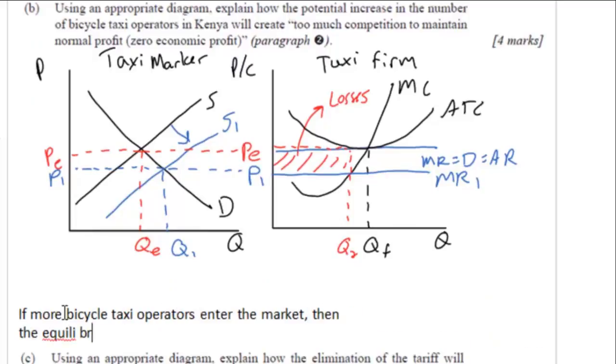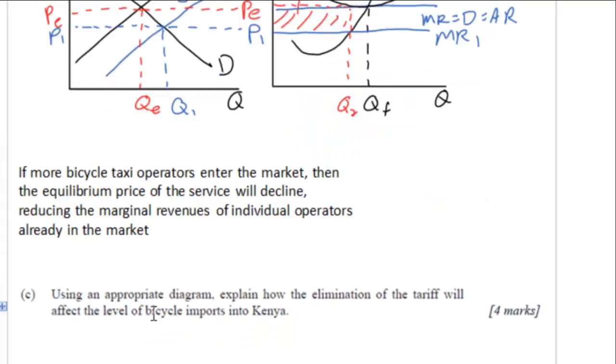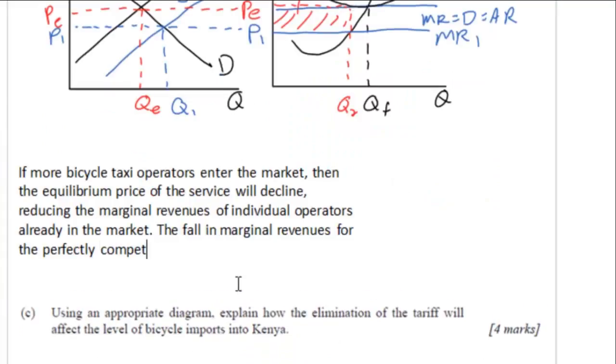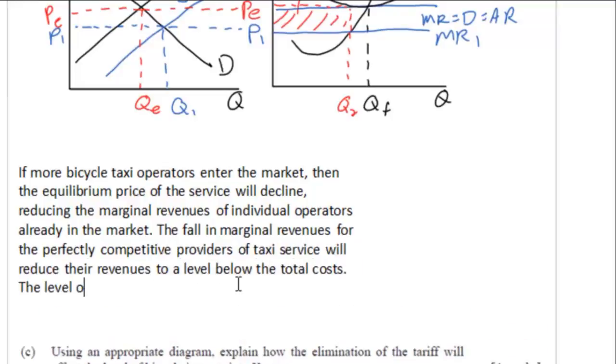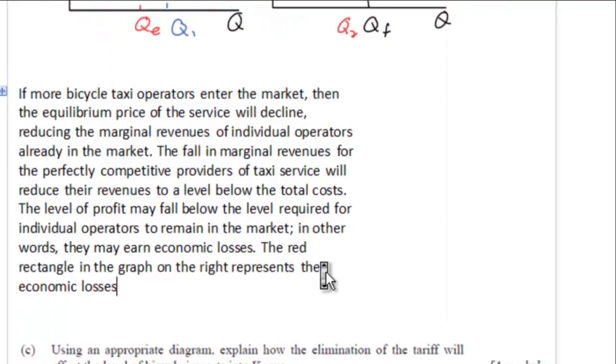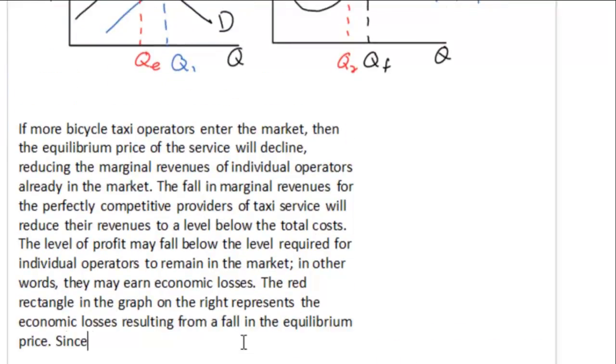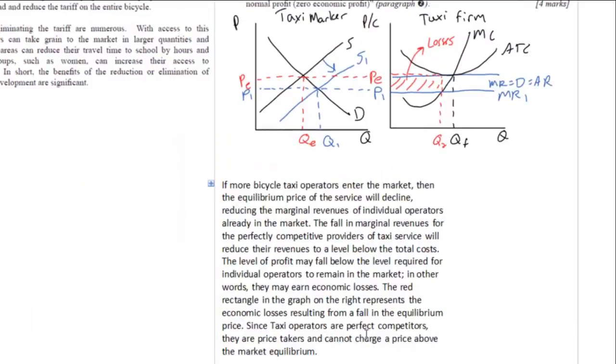Along with the correctly labeled graph on part B of a data response question, you want to be sure you have a clear explanation as well that makes explicit reference to the graph. So here I'm making connections to the article referring specifically to the bicycle taxi market, talking about how the entrance of new firms due to the lower price of bicycles will reduce or eliminate the profits of the firms already in the market. It's very important to refer to the graphs once again. Here at the end I'm going to refer to the red rectangle on the graph which represents the economic losses experienced by firms in this market following the entrance of new competitors.